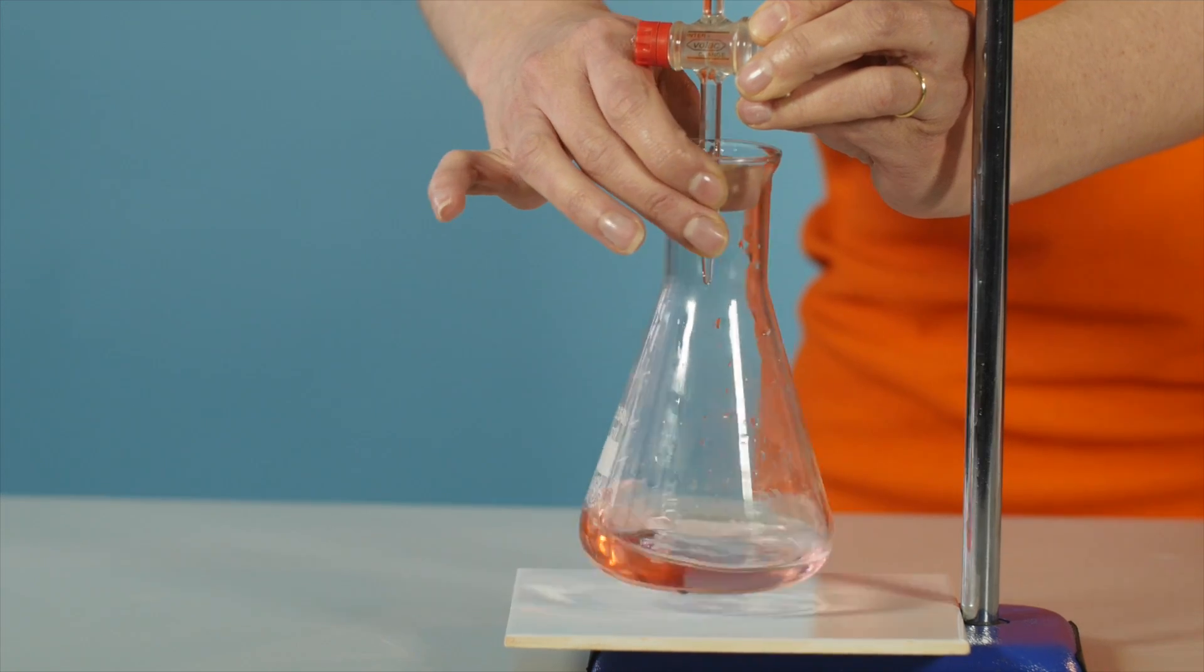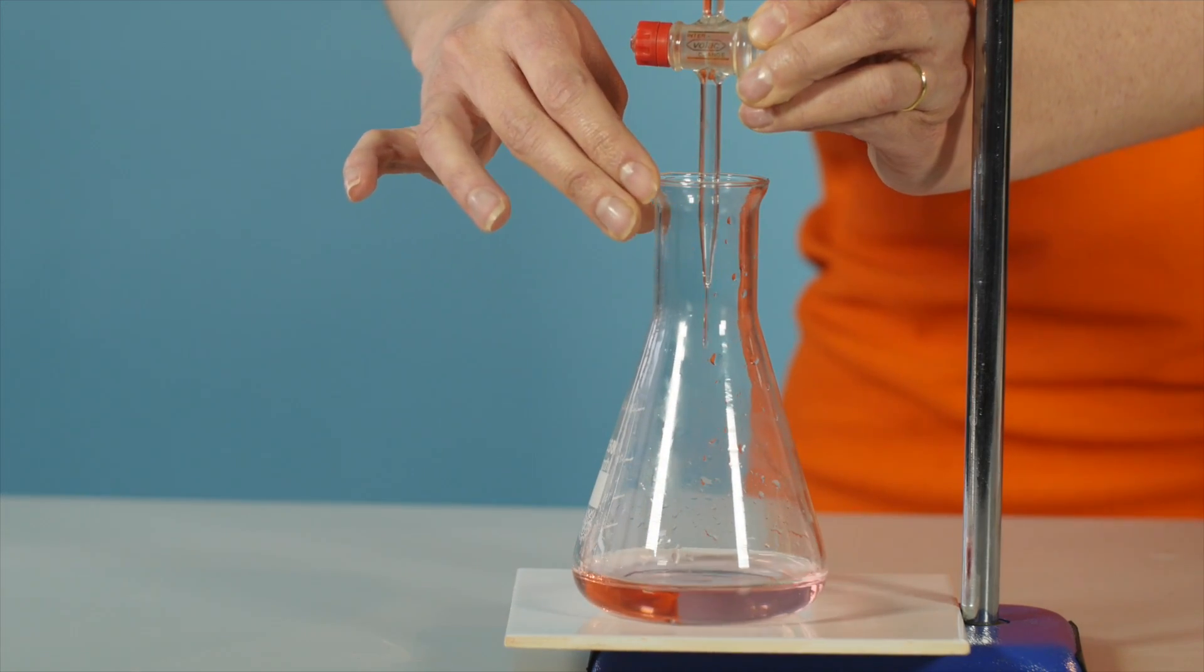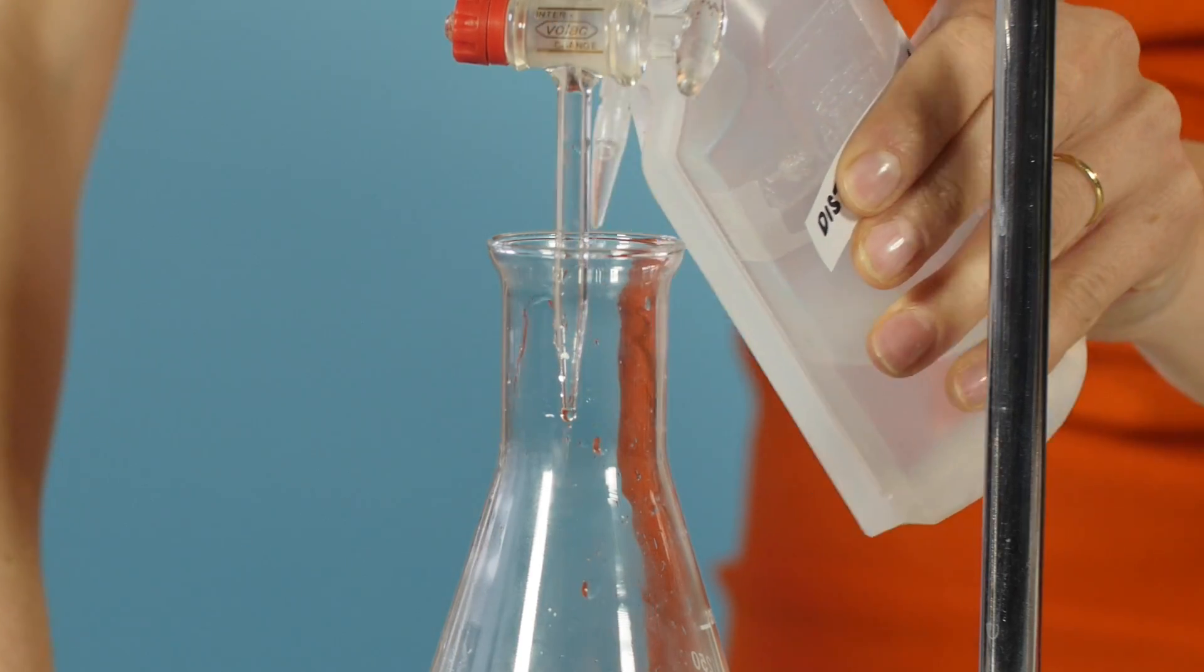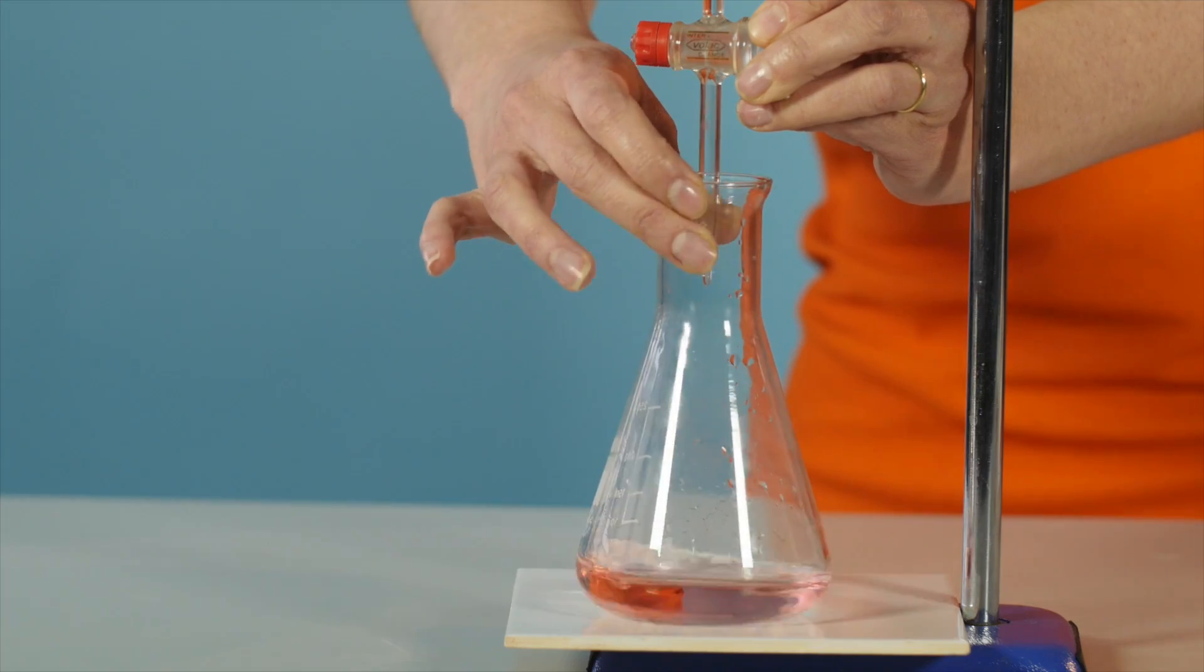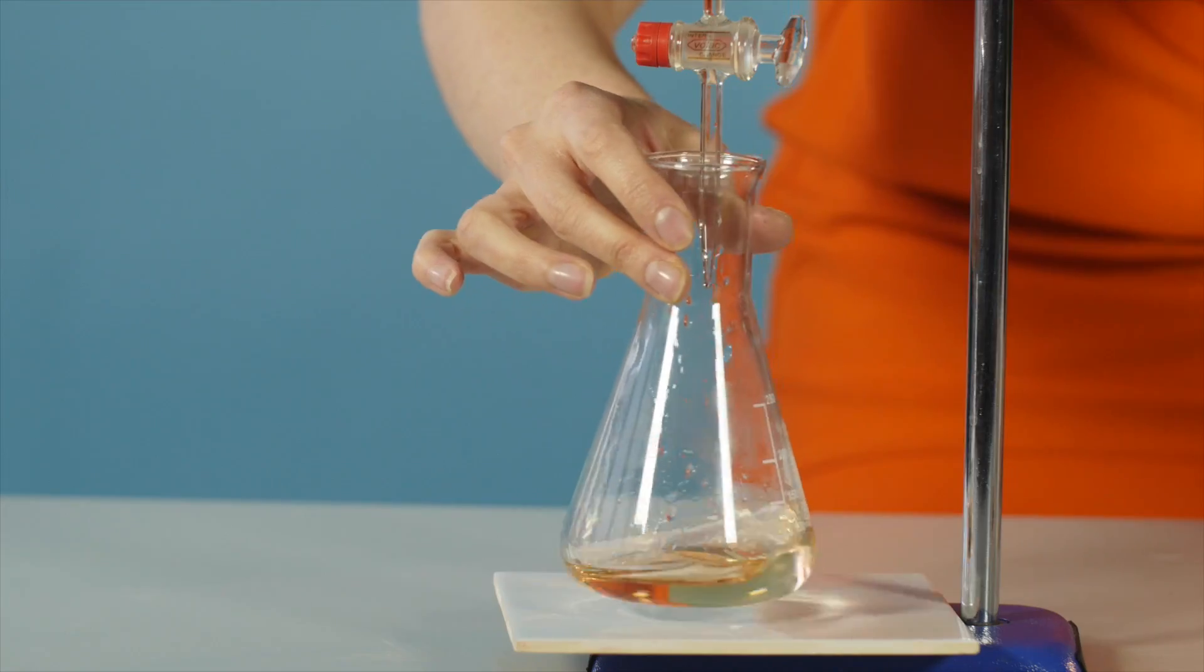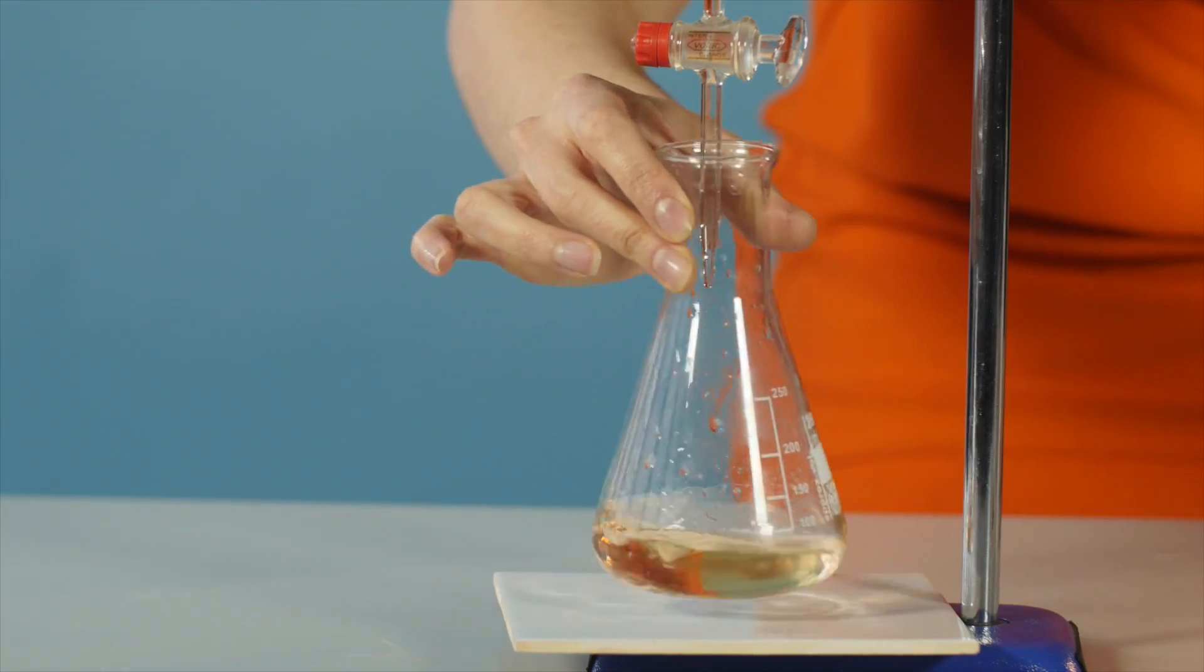As the end point is approached, gently swirl the conical flask. Then, while continuing to swirl, add the sodium carbonate solution drop by drop from the burette. After the addition of each drop, rinse the tip of the burette with distilled water. Swirl the flask, then rinse the side of the conical flask with further distilled water. When a permanent colour change occurs,